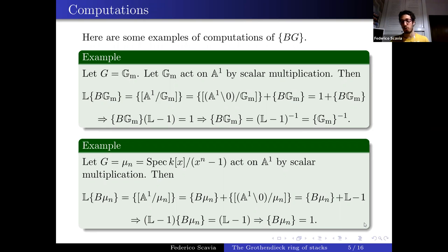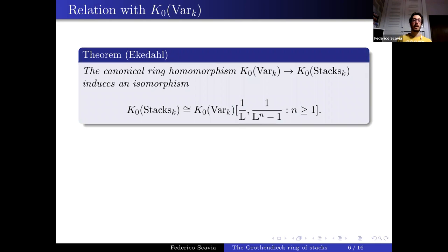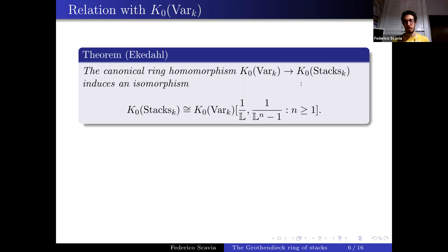The ring K0 Stacks is actually easy to understand assuming we know K0 Var. There is a natural map from K0 Var to K0 Stacks, since a scheme is a stack. This map induces an isomorphism between K0 Stacks and the localization of K0 Var at L and at (L^n − 1) for all n — that is, we invert L and all the cyclotomic polynomials.